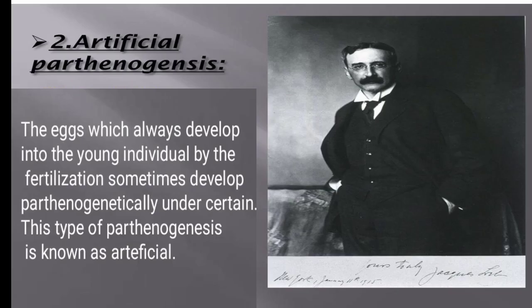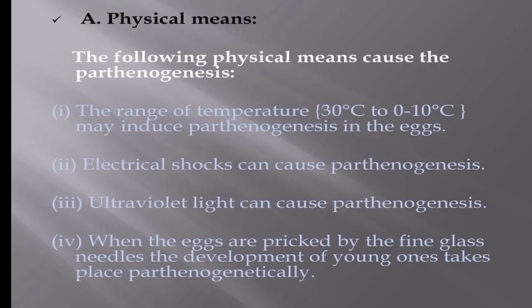The second main type is artificial parthenogenesis. Eggs which normally develop into young individuals by fertilization may sometimes develop parthenogenetically under certain artificial conditions. This is known as artificial parthenogenesis. It may be induced by various chemical and physical means. Physical means include a range of temperatures, electric shock, UV rays, and pricking eggs with fine glass needles.